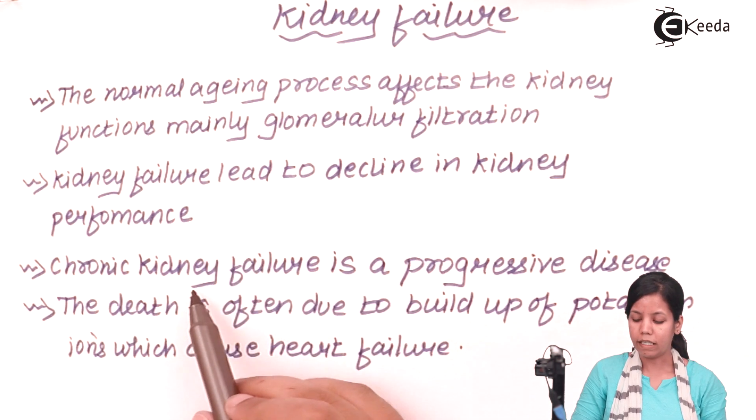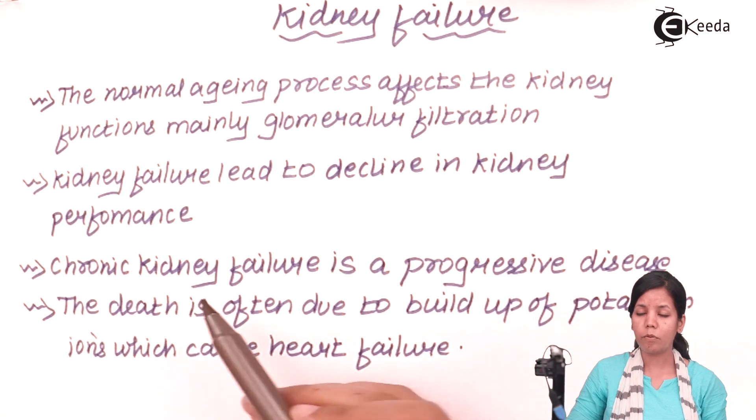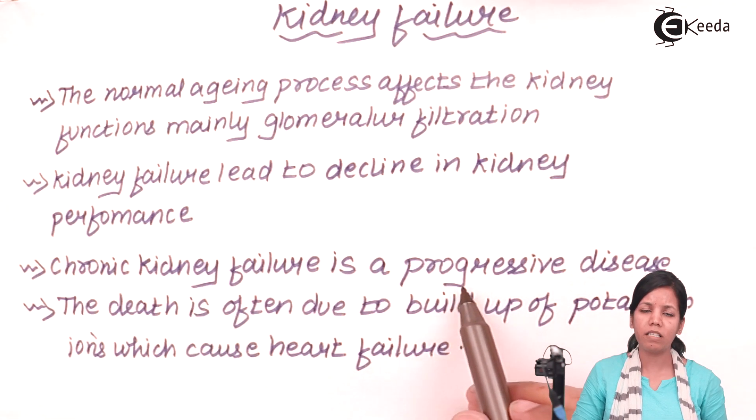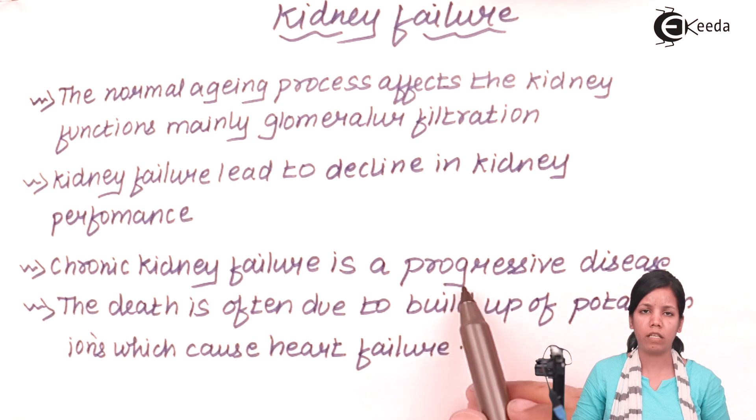Chronic kidney failure is a progressive disease and it doesn't happen suddenly. It takes a period span of 5 to 6 years to develop.